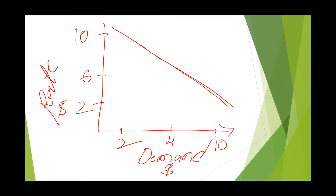As per the law of supply, when the price increases, supply also increases, so the supply curve will slope upward. For example, at a price of two, the supply is two; if the price increases to six, the supply also increases to four; if it further increases to ten, the supply also increases to ten. That means as the price is increasing, the supply is also increasing.